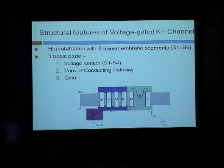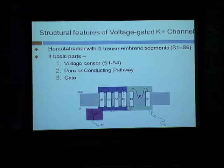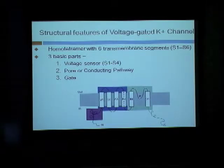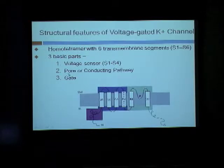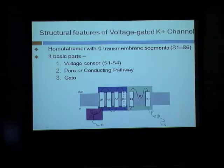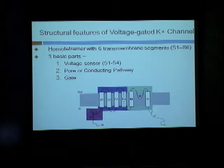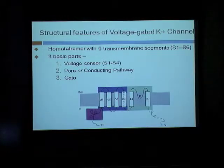Structurally, voltage-gated potassium channels are homo-tetramers with six transmembrane segments: S1 through S6. They have three basic functional parts: the voltage sensor (S1–S4, with S4 as the primary sensor driven by arginine positive charges), the pore or conducting pathway linking S5 to S6, and the gate at the C-terminal domain. When membrane potential increases, the S4 domain pulls up, pulling the S4–S5 linker, opening the gate so potassium ions flow from inside to outside the cell.